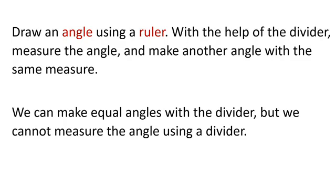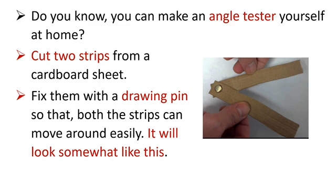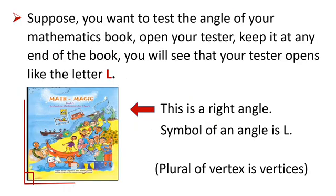Now, you know what is an angle tester. Do you know you can make an angle tester yourself at home? Cut two strips from a cardboard sheet. Fix them with a drawing pin so that both the strips can move around easily. It will look somewhat like the figure shown here. With the angle tester you made, you can test an angle.